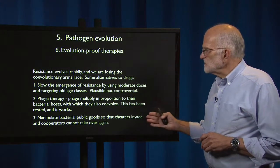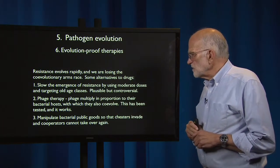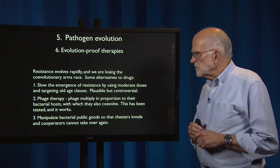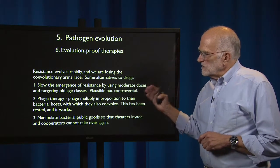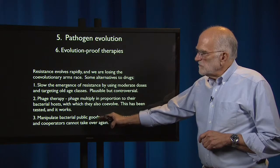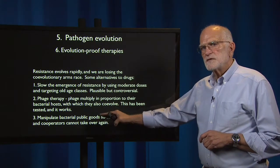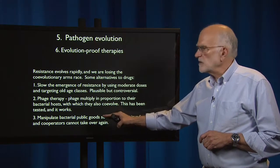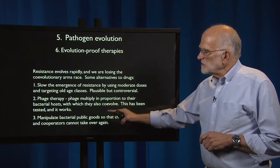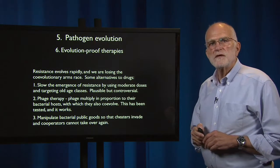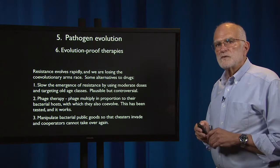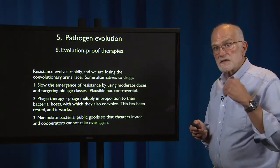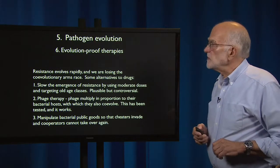Another possibility is to manipulate bacterial public goods so that cheaters invade and cooperators cannot take over again. To a certain degree, successful infection depends upon cooperation — it depends upon social behavior by bacteria. So if we can disrupt bacterial social behavior, we may be able to produce a type of treatment that doesn't elicit an evolutionary response.